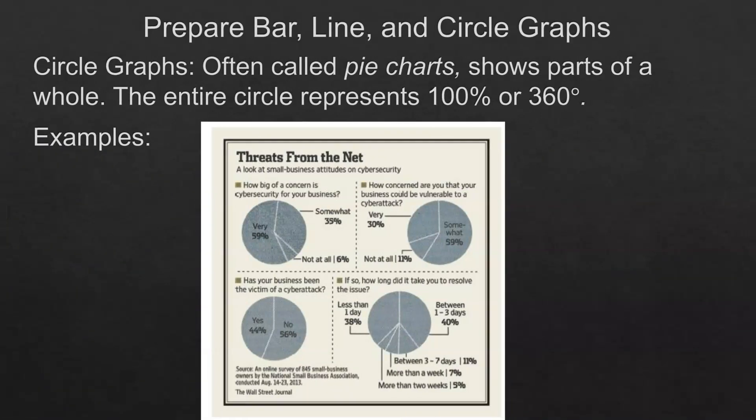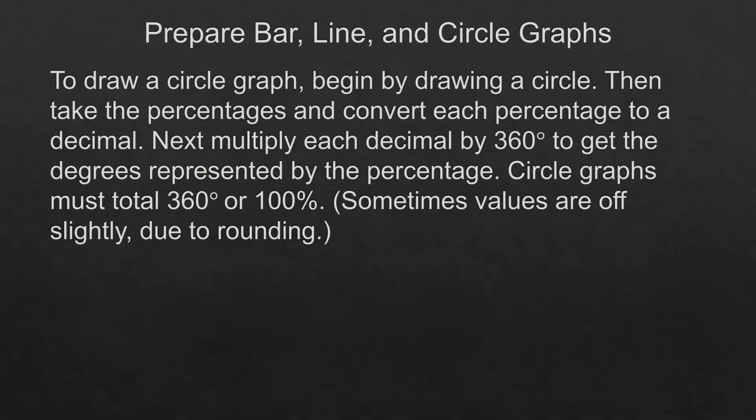Now we're going to talk about circle graphs. On circle graphs we're going to show that you can use percentages, you can use degrees. In our book we sometimes convert to degrees. You just basically take the circle and split it into segments showing the information that you're graphing. You begin by drawing the circle and then you convert your percentages to a decimal and multiply that by 360 to get the number of degrees. You could be off just a little bit, it should equal 360 degrees or 100 percent but that can vary just a tad based on rounding.